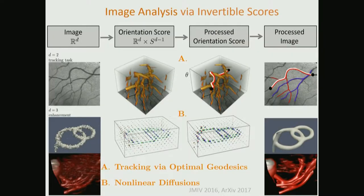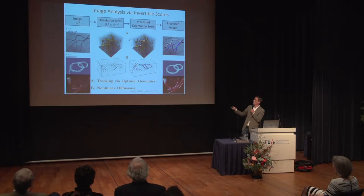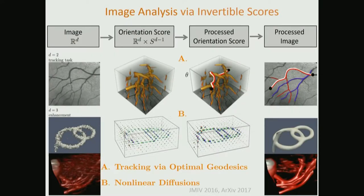So, image analysis via invertible scores: instead of directly processing images, we create a multi-orientation distribution — an invertible orientation score. In this new image representation of positions and orientations, a 2D image becomes a 3D volume. In this volume, we apply geometric control and track blood vessels along globally minimizing geodesics. This means we don't suffer from all the problems at crossings and bifurcations.